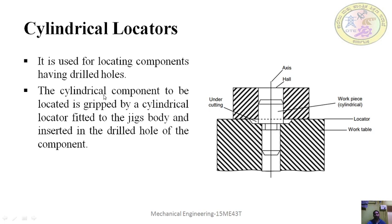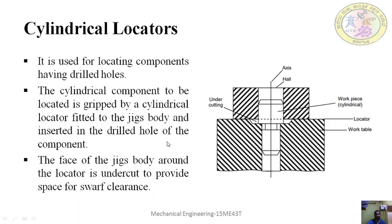When the workpiece already has drilled holes, we use the cylindrical locator — it is inserted into the holes. The cylindrical locator is a vertical cylinder fitted to the jig body and inserted into the drilled hole of the component. The face of the jig body around the locator is undercut to provide a face for chip clearing. You can see here that some undercut is provided in order to allow chip clearance from this area.